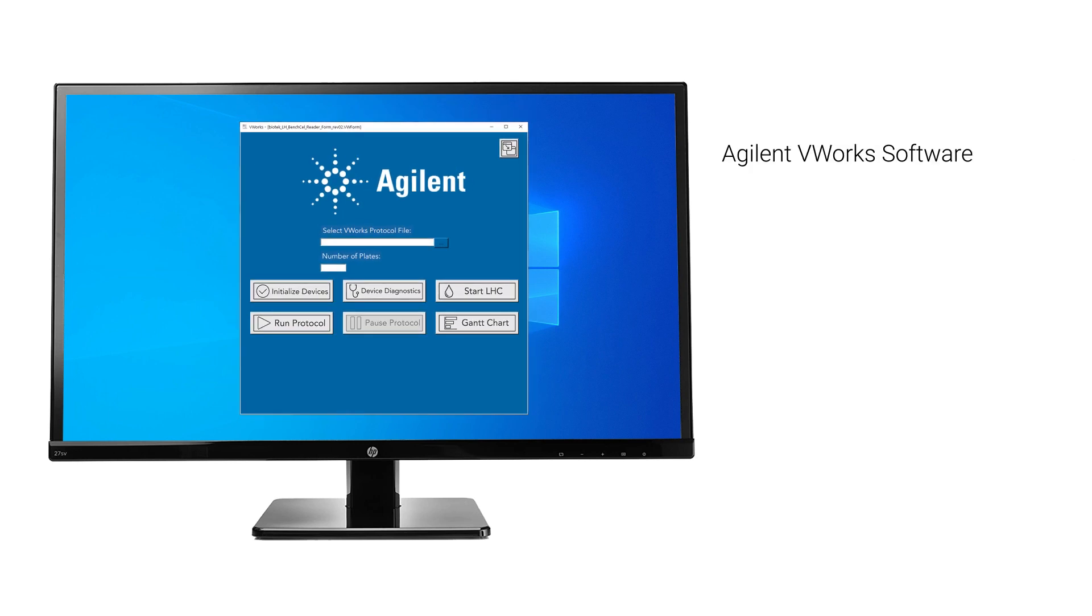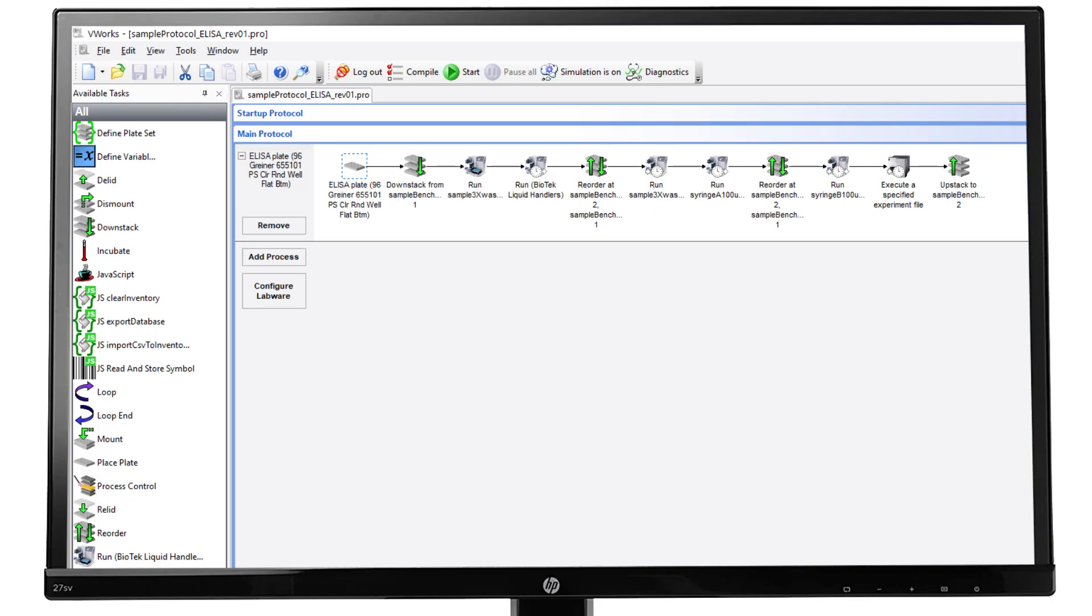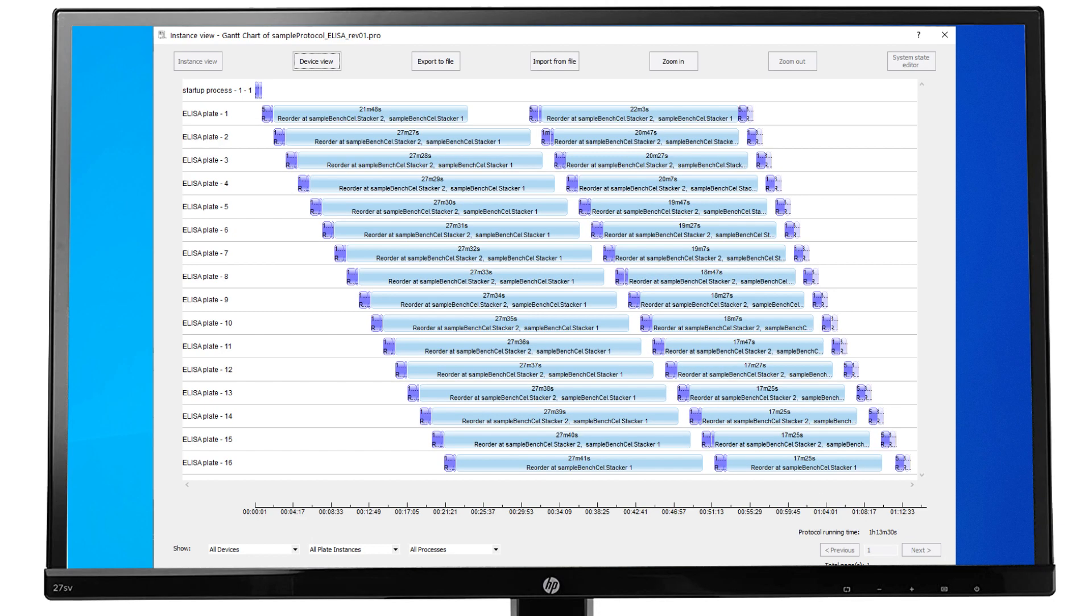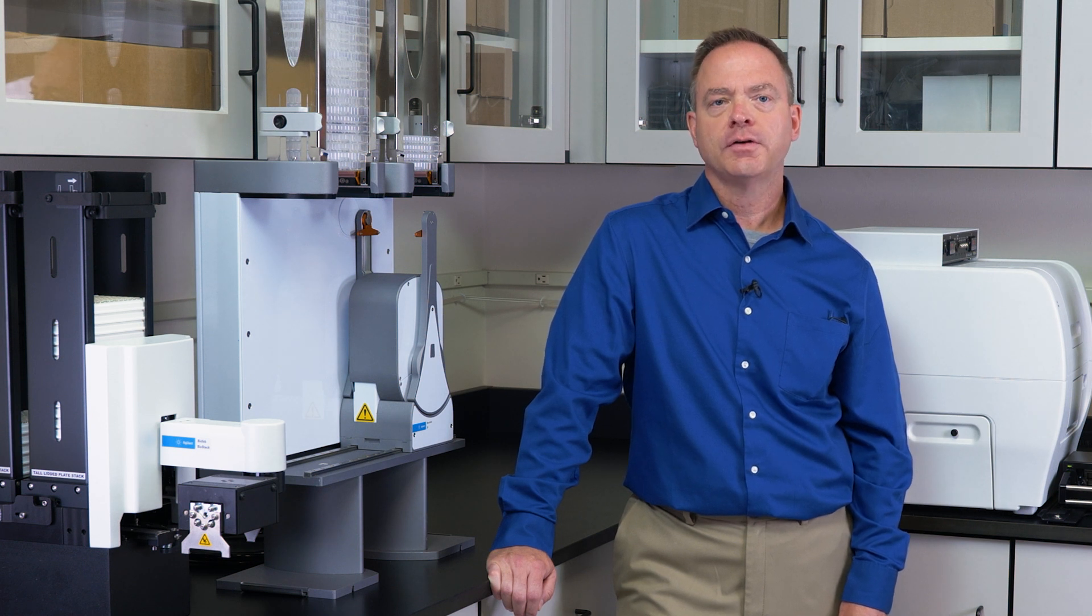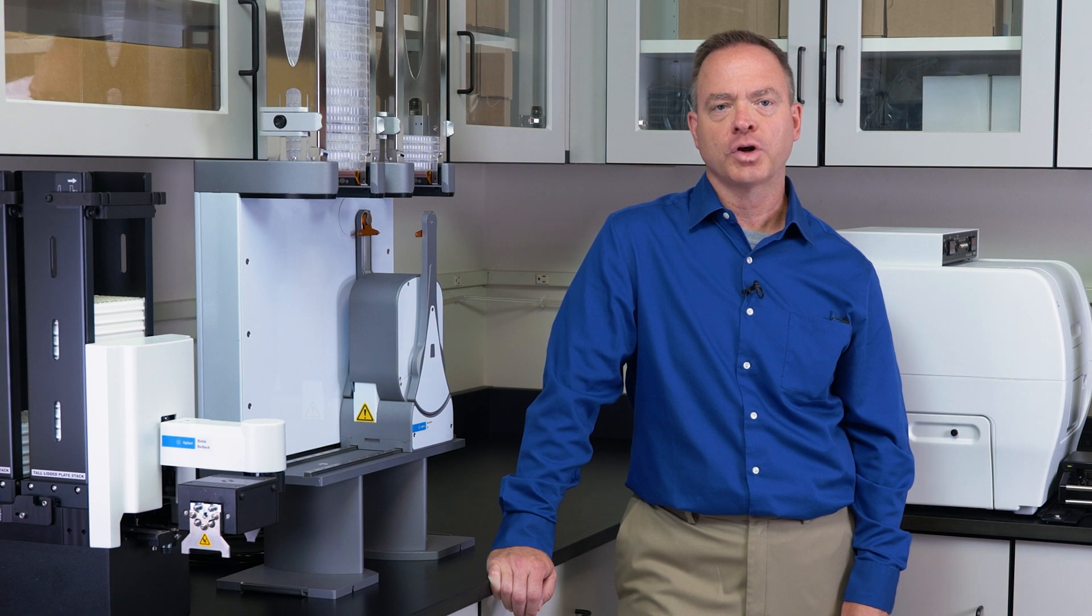The BenchCell is run using Agilent's VWork software which offers an intuitive graphical interface and dynamic scheduling capabilities that makes setting up and running a multi-step, multi-instrument protocol easy to complete. Users can create and run protocols, forms and monitor progress of their workflows from VWorks.